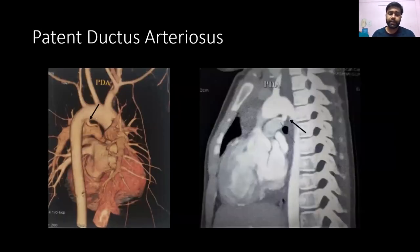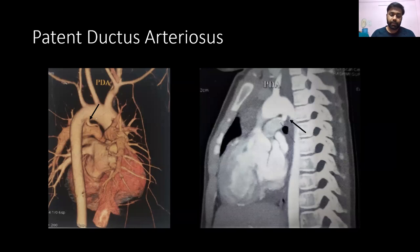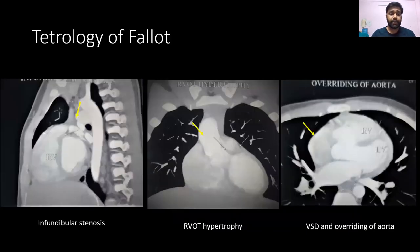Patent ductus arteriosus is the persistent communication between the pulmonary trunk and the aortic arch, and its presence indicates an associated congenital heart disease.